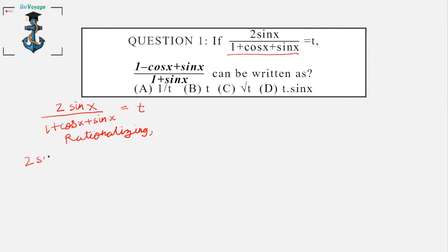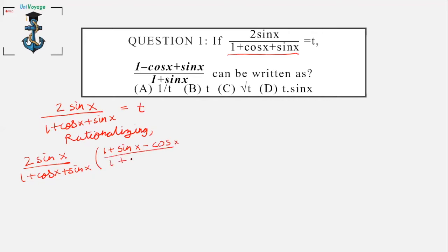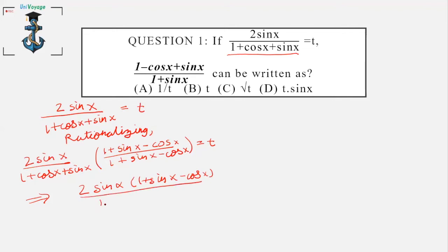After rationalizing, what we get is 2sinx / (1 + cosx + sinx) multiplied by (1 + sinx - cosx) / (1 + sinx - cosx). This gives us 2sinx·(1 + sinx - cosx) divided by (1 + sinx)² - cos²x.